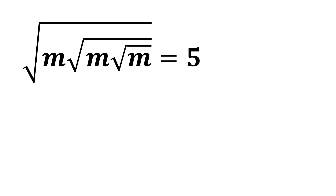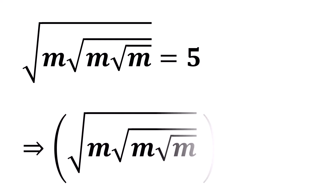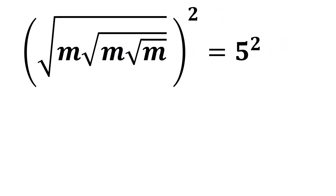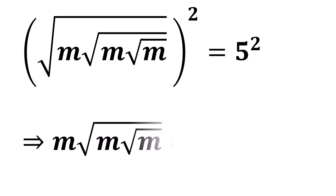By squaring both sides, we can write the square of the square root of m times the square root of m times the square root of m, which equals 5 squared. The square root and the square will cancel each other out, leaving us with m times the square root of m times the square root of m, which equals 5 squared.